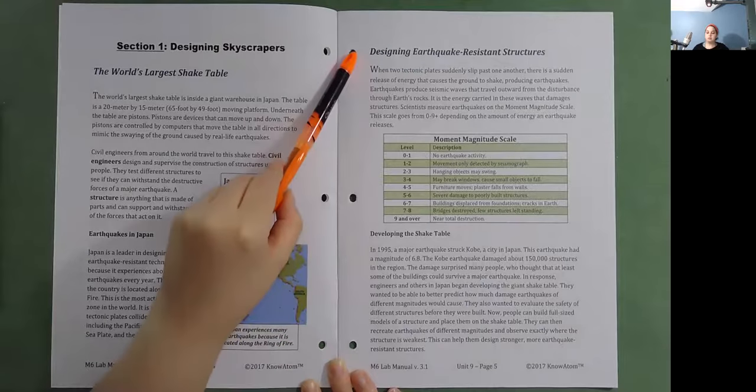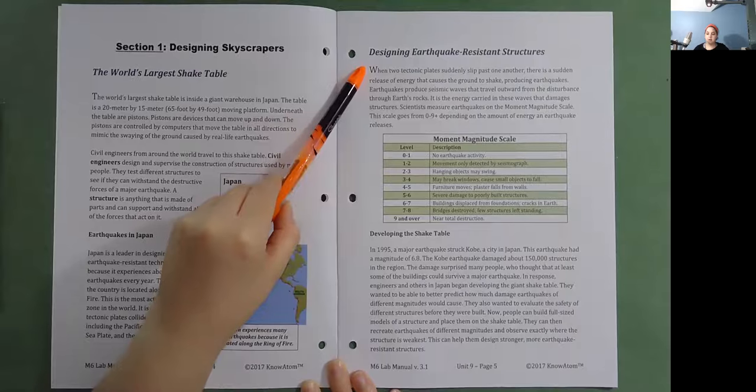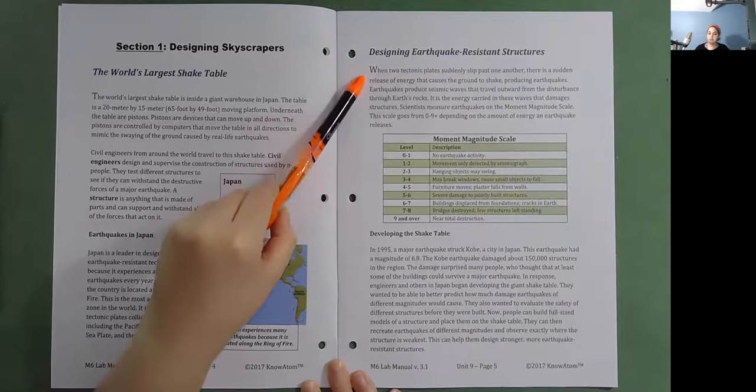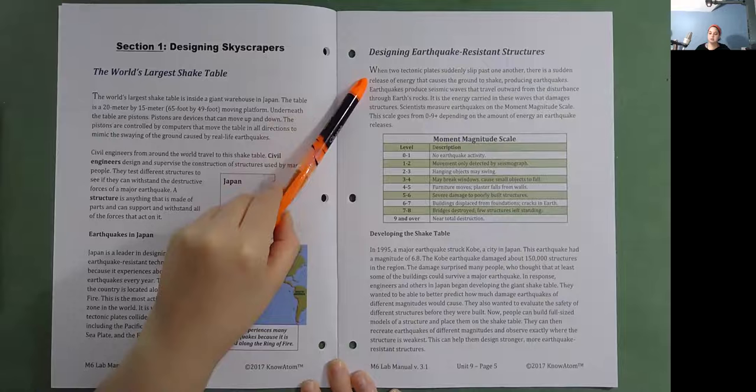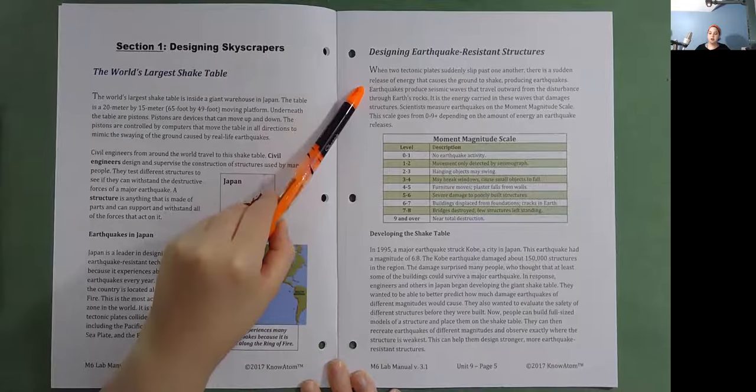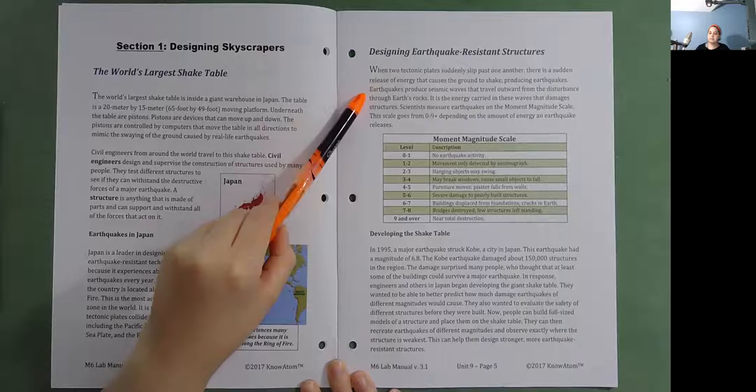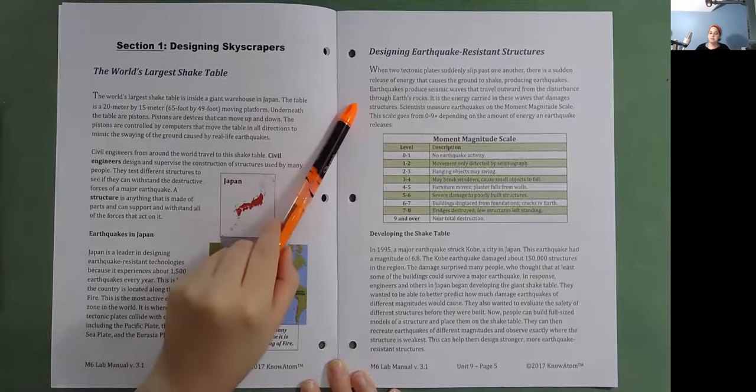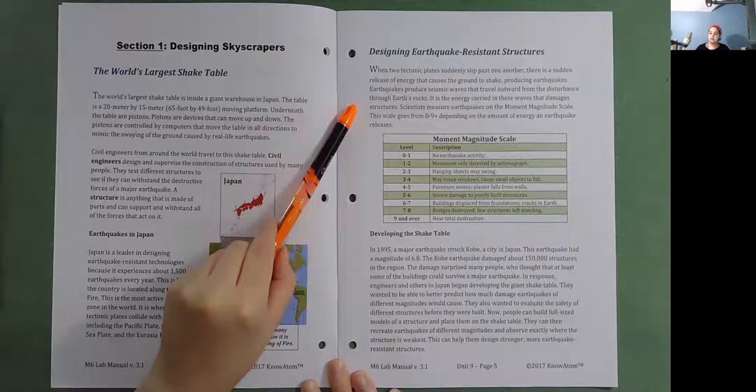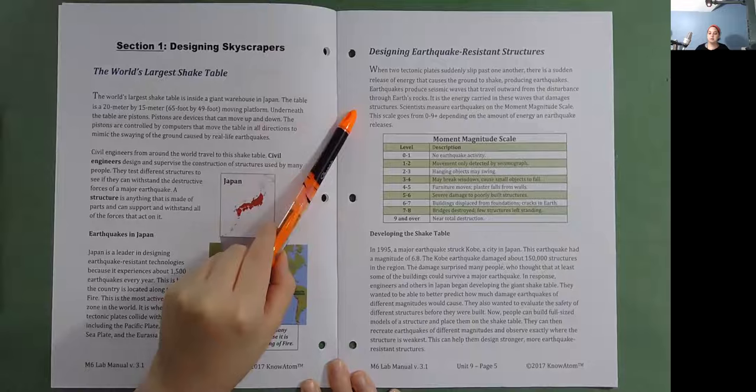Designing earthquake-resistant structures. When two tectonic plates suddenly slip past one another, there is a sudden release of energy that causes the ground to shake, producing earthquakes. Earthquakes produce seismic waves that travel outward from the disturbance through Earth's rocks. It is the energy carried in these waves that damages structures. Scientists measure earthquakes on the moment magnitude scale. This scale goes from 0 to 9+, depending on the amount of energy an earthquake releases.